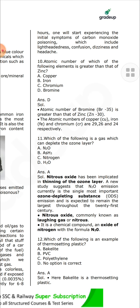The atomic number of which of the following elements is greater than that of zinc? Bromine. The atomic number of bromine is 35, which is greater than zinc's atomic number of 30. The atomic numbers of copper, iron, and chromium are 29, 26, and 24 respectively.